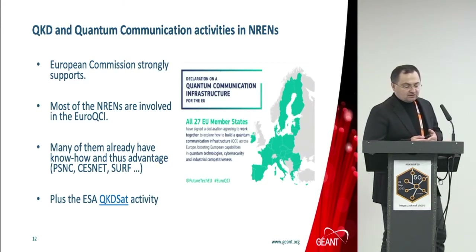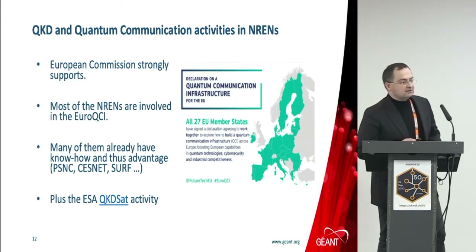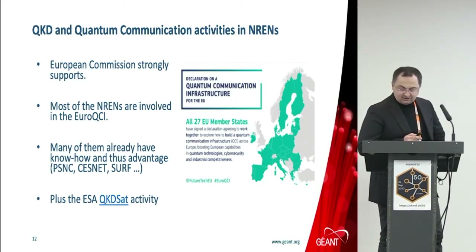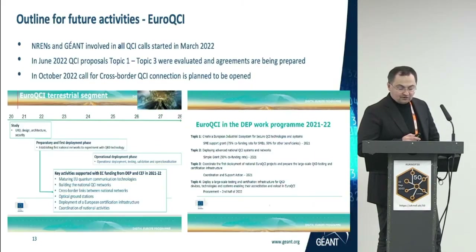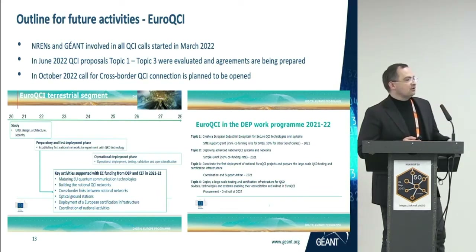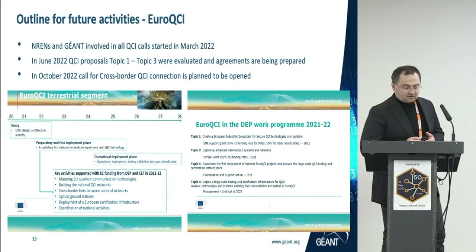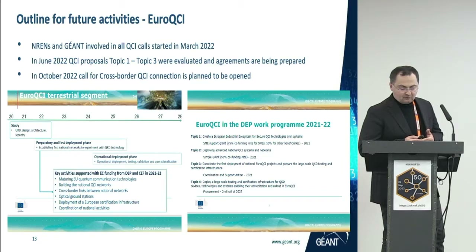The NREN and GÉANT community activities are closely related, right now, to the QCI, which gathers all countries that have signed their intention to join the QCI initiative. As a community, we are supporting that. Just this year, the European Commission launched tenders to build the national QCI infrastructures. The projects were selected and will start at the beginning of this year, but there are still two call topics that will be announced this year.